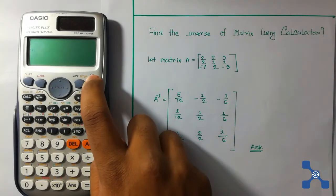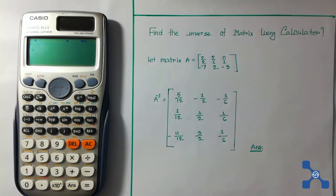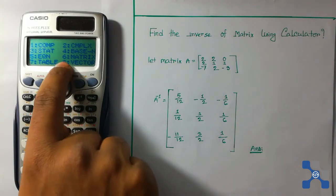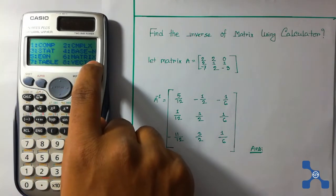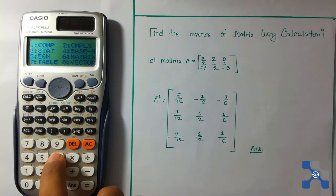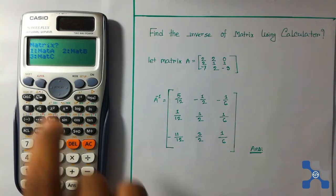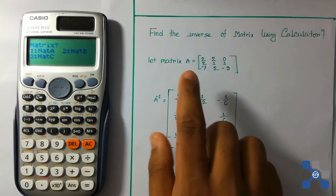To power on this calculator, press the on button, then press the mode button and press 6 for matrix. Press 6 to see mat A, mat B, and mat C where we'll load our given matrix.